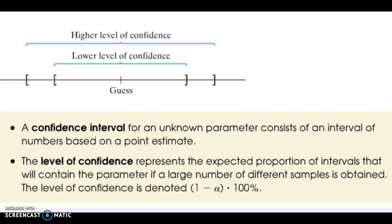We do get a point estimate for what we think the average is, but it doesn't make much sense to give just one single number. We can be a lot more confident if we give a range of numbers, and the bigger range we give, the more confident we become. Based on our sample, if we got a point estimate of 190 pounds, there's no way that's exactly right. But if we said anywhere from 180 to 200 pounds, we'd be more confident that range contained the true average.